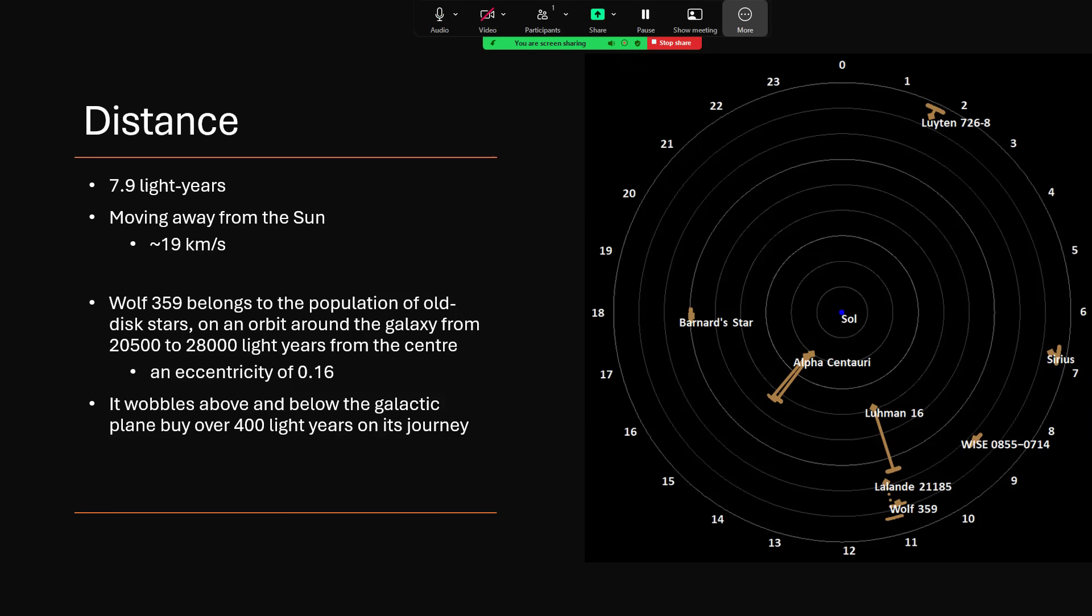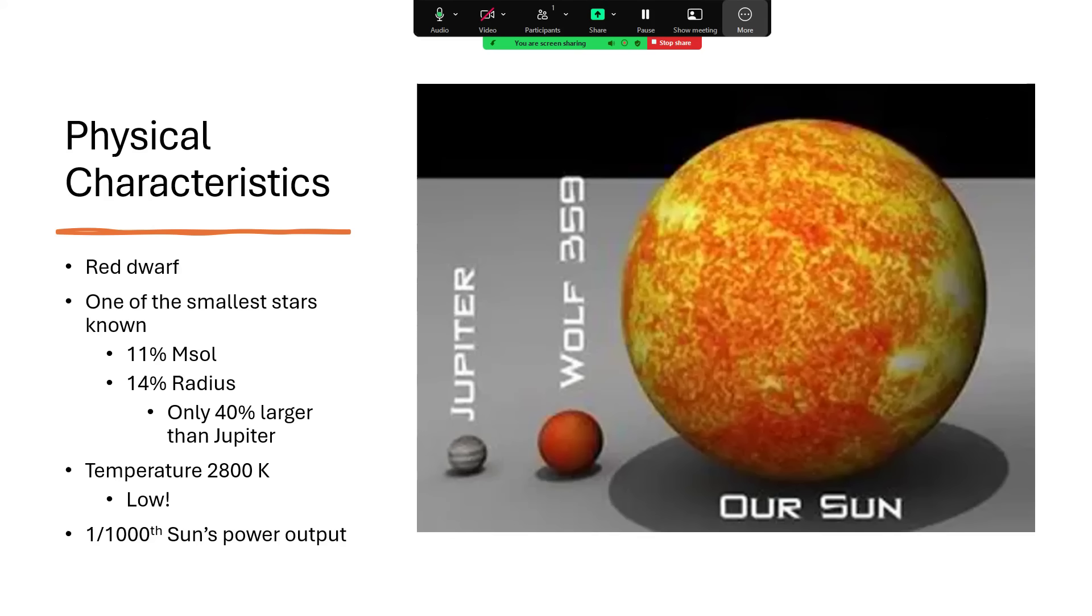So Wolf 359, I said it was a small, faint red dwarf star, and it is. It's one of the smallest stars that we know of. It's just 11% the mass of our sun, 14% the radius, and only 40% larger than the planet Jupiter. And with that low mass goes a low rate of nuclear fusion. You have low temperatures and low pressures in the core, so these are quite slow burners. The temperature on the surface of Wolf 359 is just 2,800 Kelvin, below that 3,000 that we normally associate with being red hot.